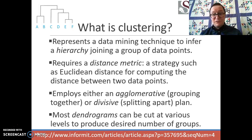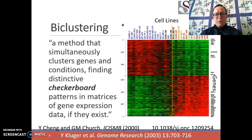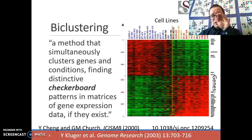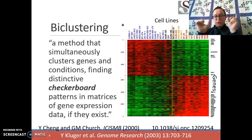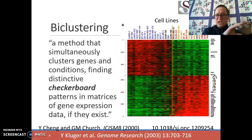Here is an example of the output of biclustering. One of the first algorithms for this purpose was created by Cheng and Church, published in the year 2000. In this diagram from a genome research article, we have cell lines across the horizontal axis and each gene represented by a different row. We've re-sorted the cell lines to bring together those with the most similar patterns of gene expression, and re-sorted the genes by how similar they are to other measured genes.